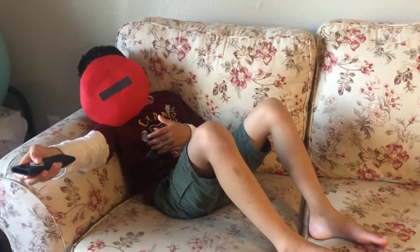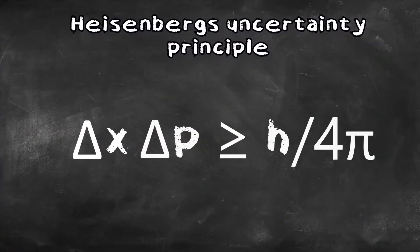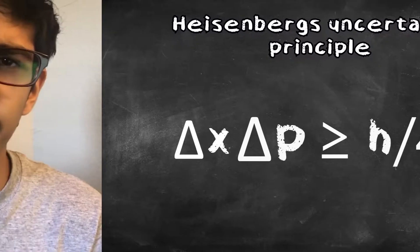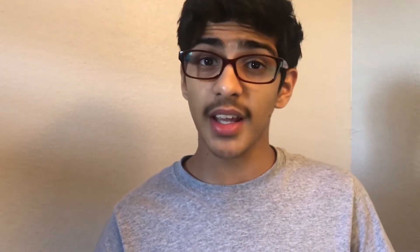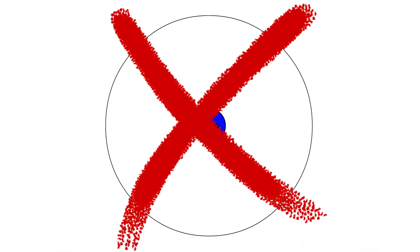But why is it all so unclear and hard to understand? Because of this fundamental rule in physics — Heisenberg's Uncertainty Principle. It stands to make sure there's always some uncertainty in position and in momentum. Basically, you can never know exactly where the particle is and where it's going at the same time, which is why an atom can't look like this.